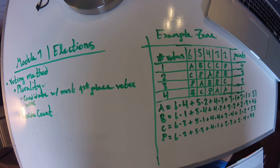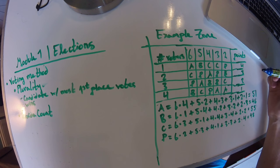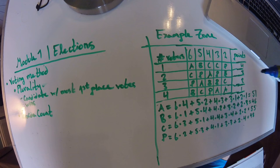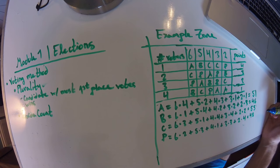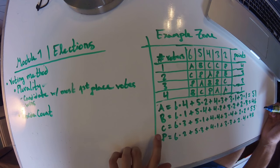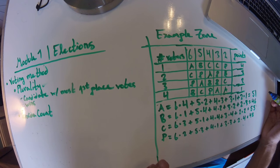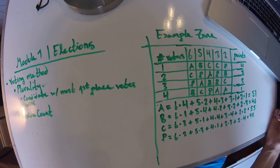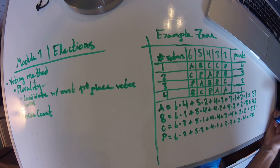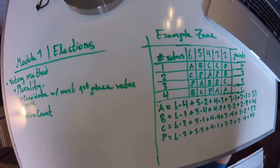The idea is that you're multiplying the number of ballots times the number of points that the candidate got in each ballot type. Notice that although both the plurality method and the Borda count method got cherry as the winner, the order after that is a little different. Peach was in last place in the plurality method but is now second-to-last — fewer people gave it as their first preference, but more people gave it as a second or third choice rather than last.